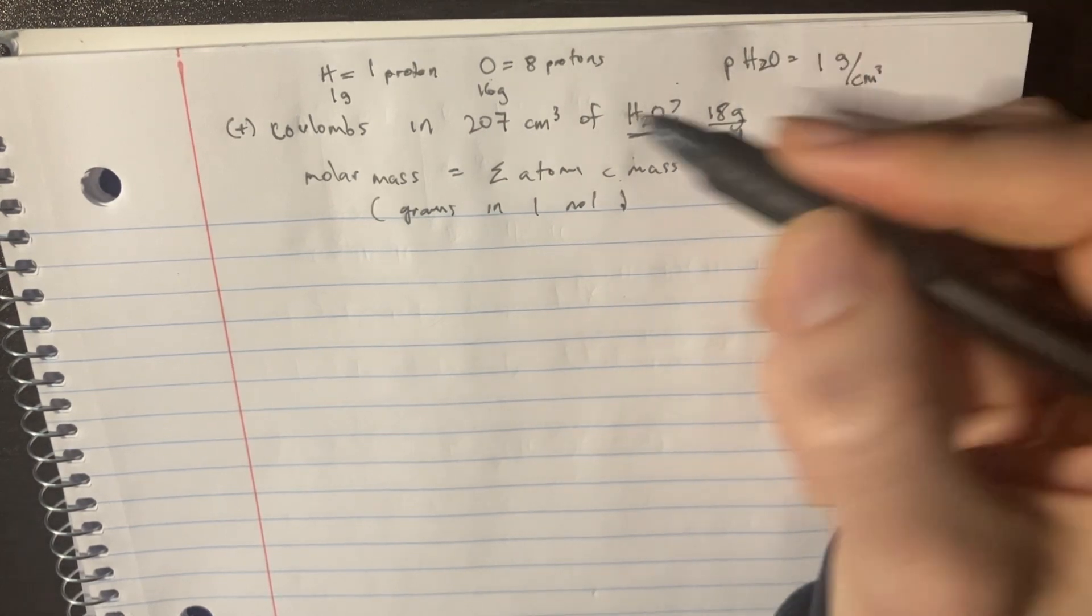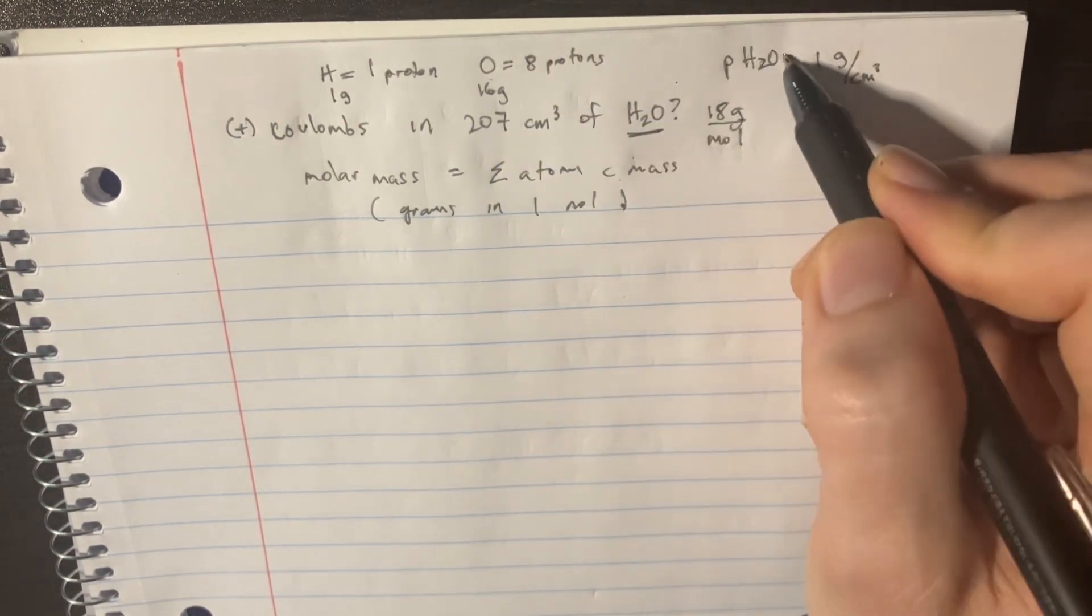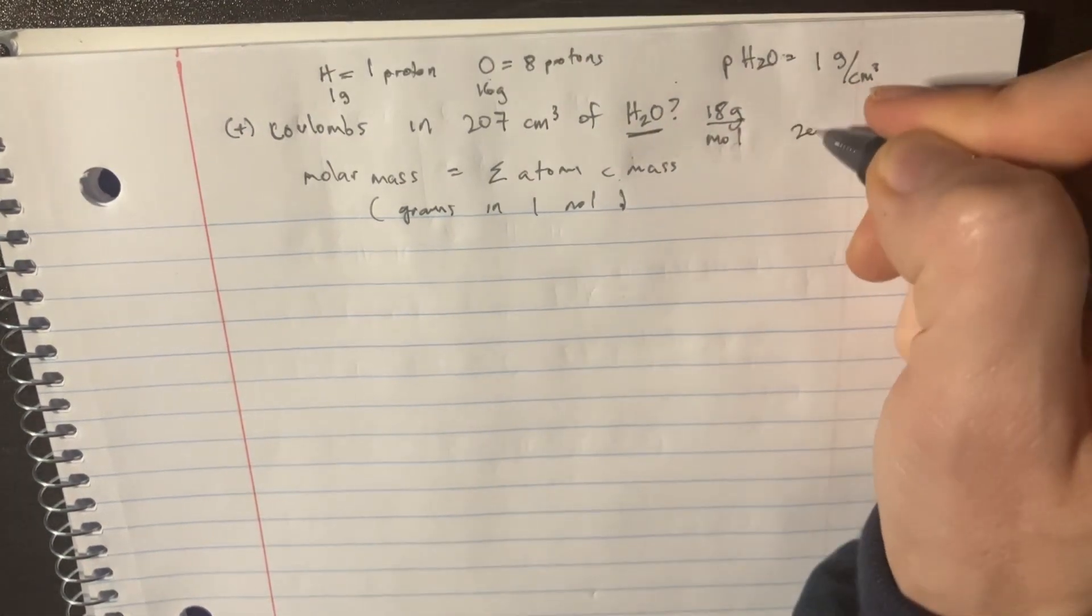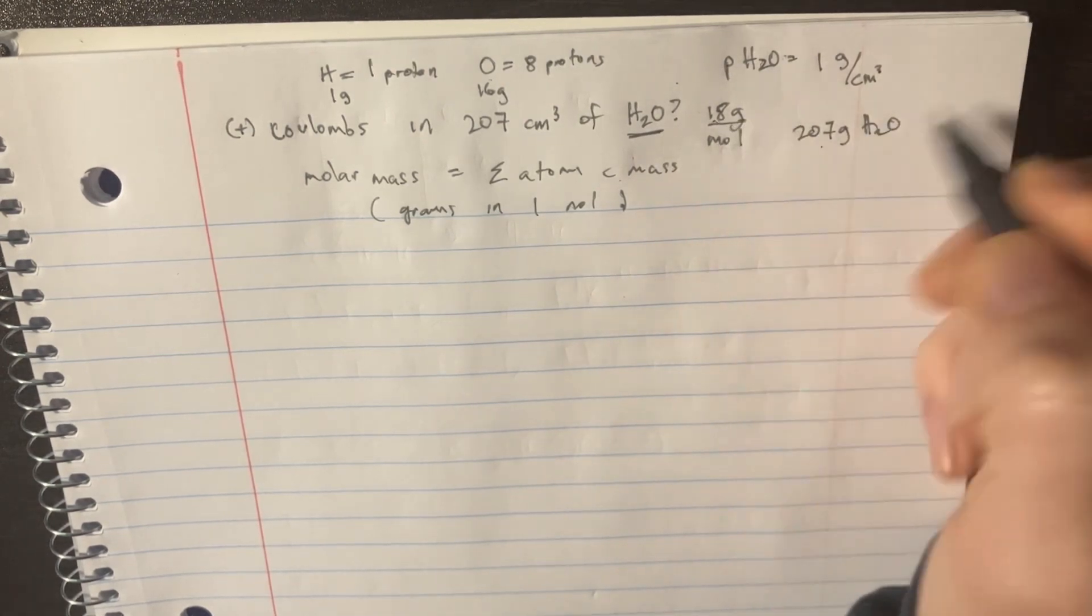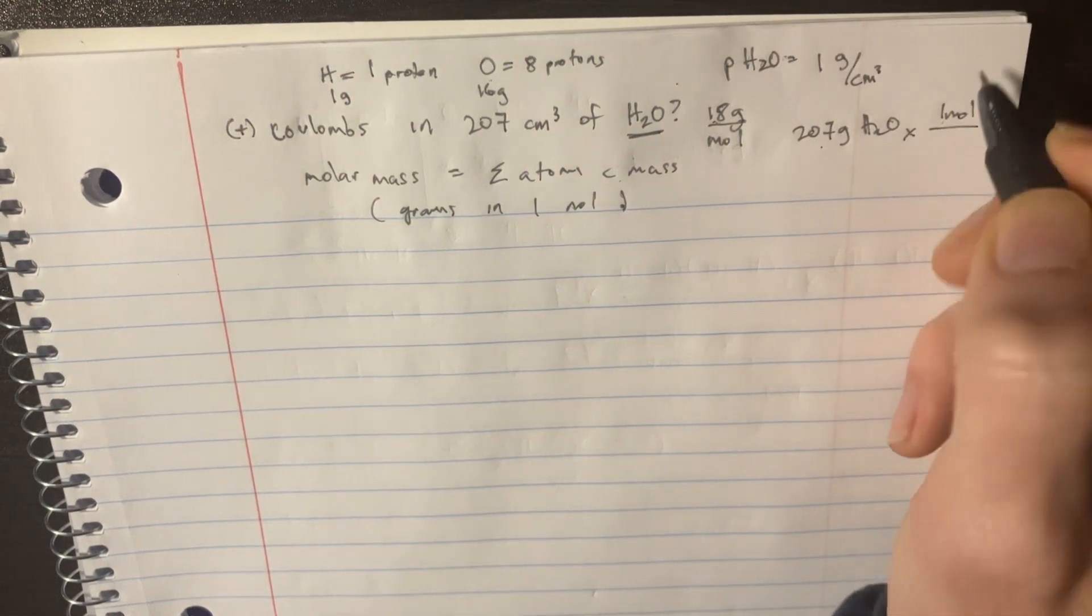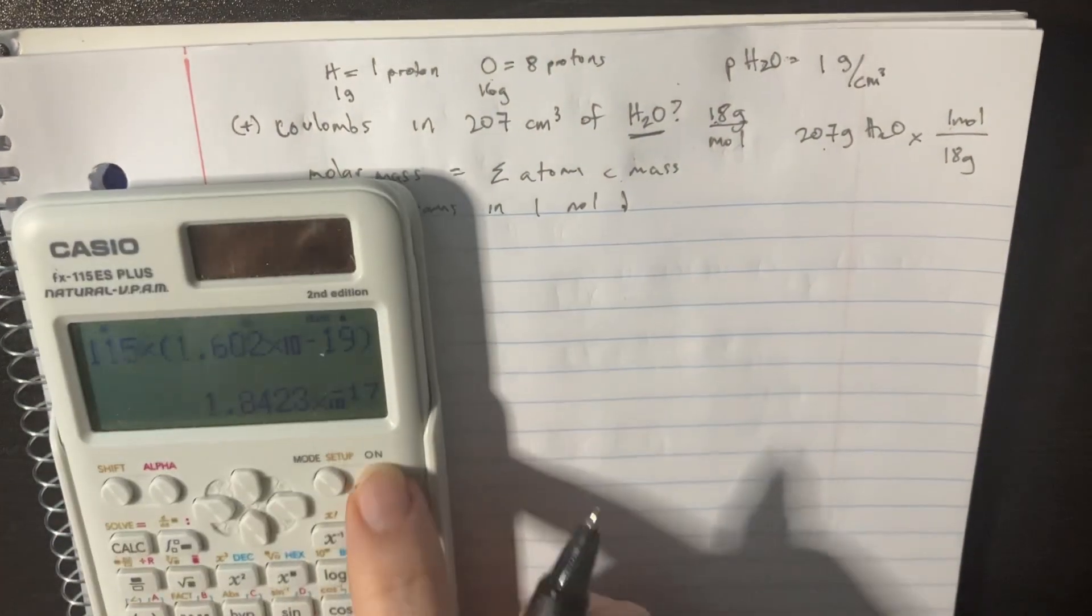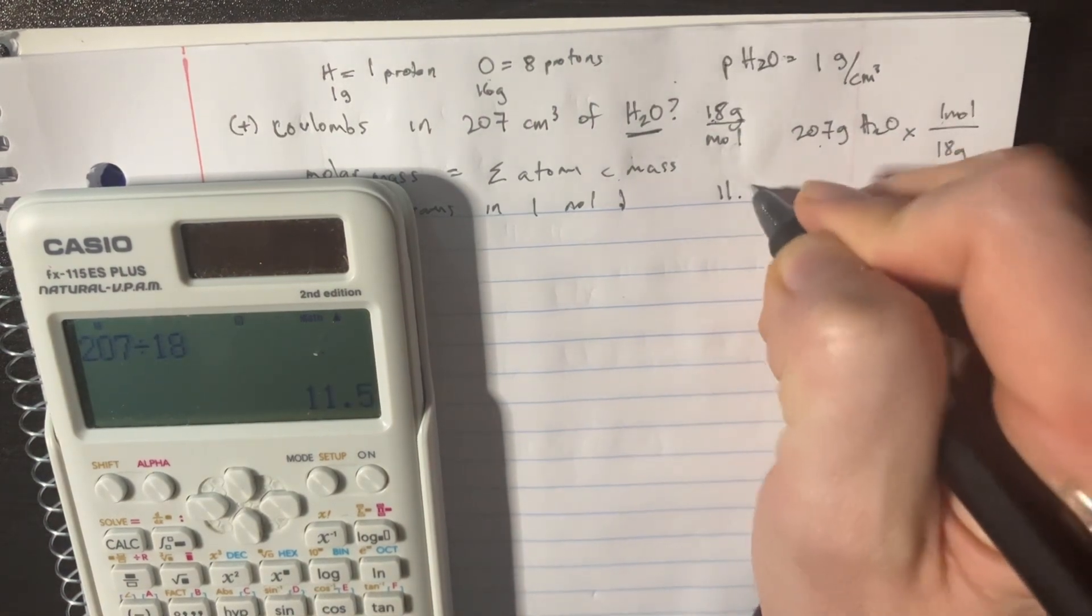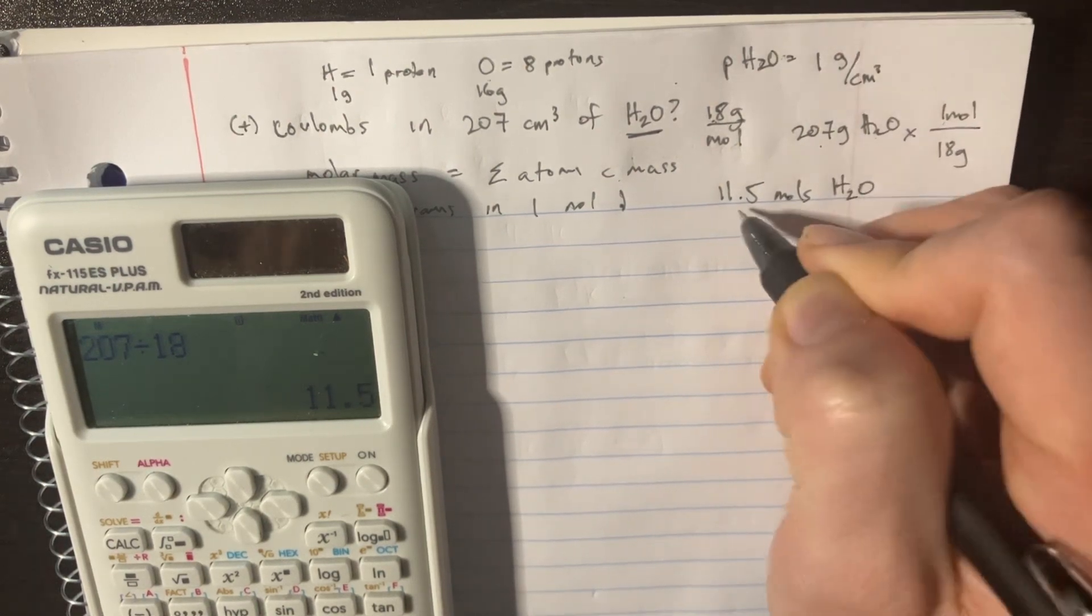Which means that if we are given 207 cubic centimeters and the density of water is 1 gram per cubic centimeter, that's 207 grams of water. And if we divide that by this 18 over here, we go times 1 mole divided by 18 grams, then we're going to get 207 divided by 18 is 11.5. So 11.5 moles of H2O so far.